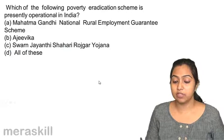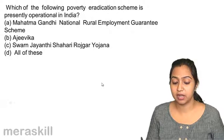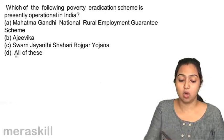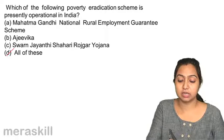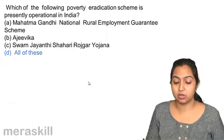Which of the following poverty eradication schemes are presently operational in India? MNREGA, Ajivika, Swarn Jayanti, and Shari Rozgar Yojana — all these programs are running in India to alleviate poverty.